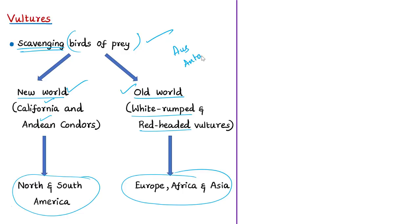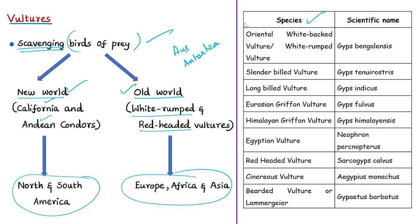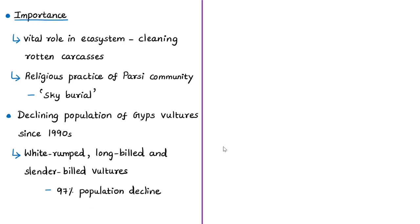According to government sources, there are no vultures in Australia and Antarctica. In the Indian scenario, nine species of vultures exist in India, and among these nine species, five belong to the genus Gyps. Of these five, three Gyps vultures — the white-rumped vulture, the long-billed vulture, and the slender-billed vulture — are residents of India. The remaining two, the Eurasian griffon vulture and Himalayan griffon vulture, are largely wintering species only.